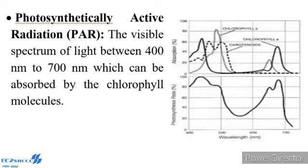Photosynthetically Active Radiation (PAR): The visible spectrum of light between 400nm to 700nm which can be absorbed by the chlorophyll molecules. Light is one of the most important factors affecting photosynthesis. Three characteristics of light — intensity, quality, and duration — significantly influence the rate of photosynthesis. Light between the wavelength of 400nm to 700nm is most effective for photosynthesis and is called photosynthetically active radiation. As the intensity of light increases, the rate of photosynthesis increases.